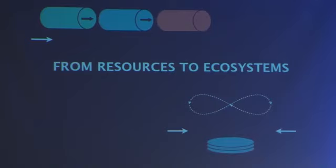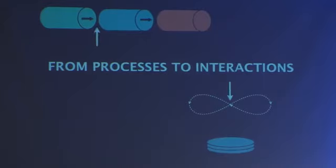The second big shift that happens is in the formula of value creation. So traditionally, in a pipe, the formula of value creation was the end-to-end process that aggregated labor and resources towards a certain outcome.